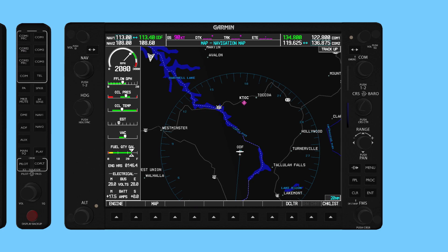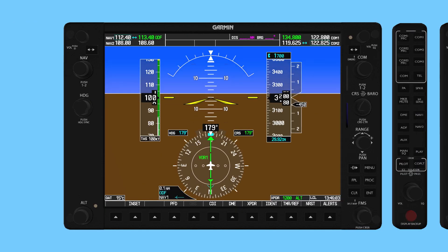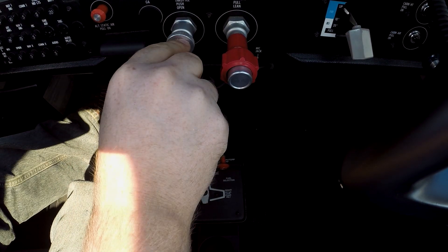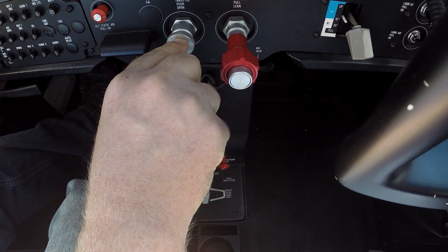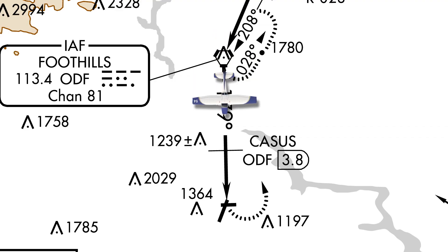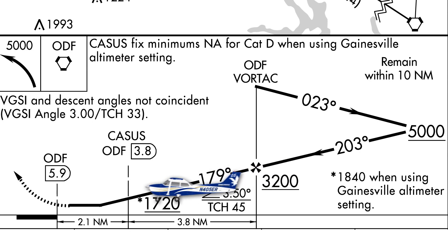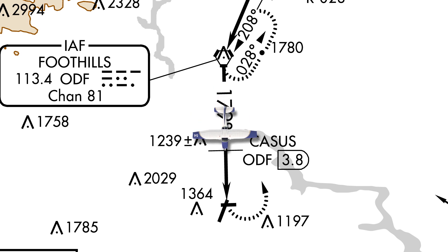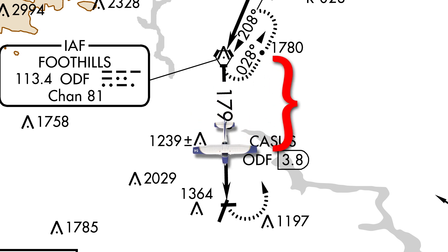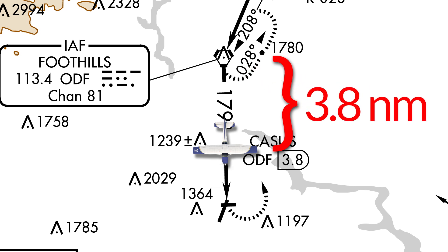After crossing the final approach fix and established on the 179-degree radial, reduce power to 2,000 RPMs, pitch the nose to 3 degrees nose down, lower the flaps to 10 degrees confirming you're below 110 knots, and apply approximately two nose-down trim rotations to help offset the induced nose-up from the addition of flaps. It is important to ensure that while maintaining the stabilized descent on the final approach course, that you cross the Caches intersection at or above 1,720 feet MSL, or at or above 1,840 feet MSL when utilizing the Gainesville altimeter setting. If you've calculated your descent rate properly, you should arrive at Caches close to 1,720 feet, but make sure your distance from the Foothills VOR is 3.8 nautical miles or more before descending any further.